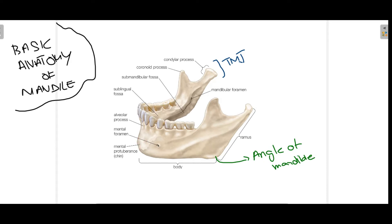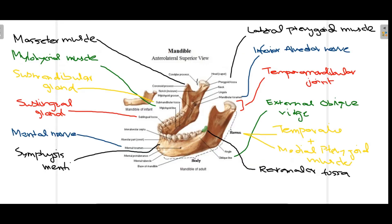Between the first premolar and the second premolar, roughly in between them and downwards, we have the mental foramen. This mental foramen is important because the mental nerve passes through it. The horizontal structure is the body of the mandible, the vertical structure is the ramus of the mandible, and at the junction of the body and ramus is the angle of the mandible. This is the very basic anatomy of the mandible.